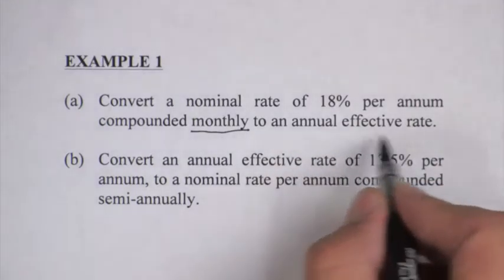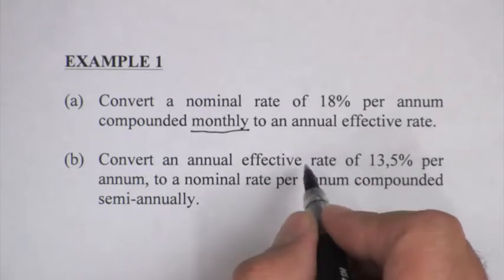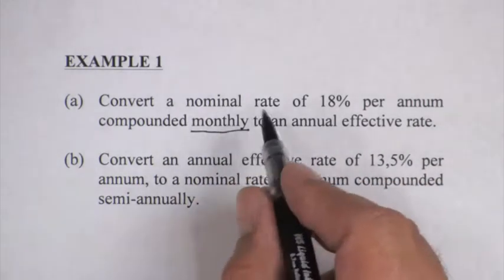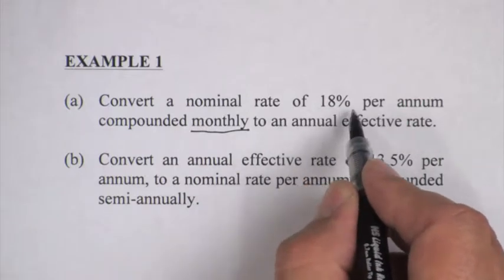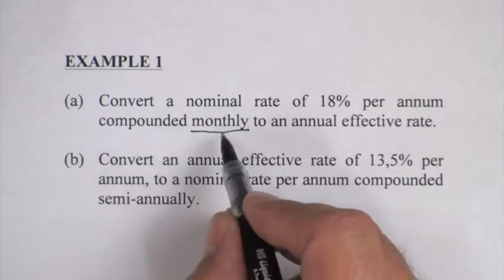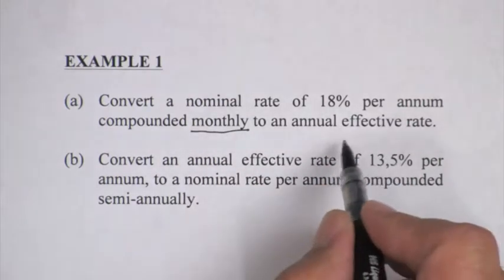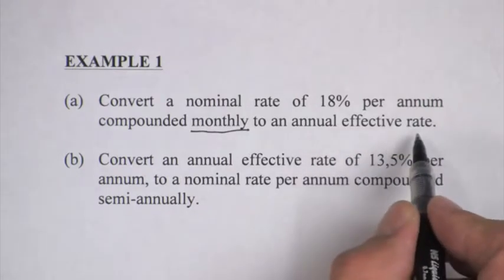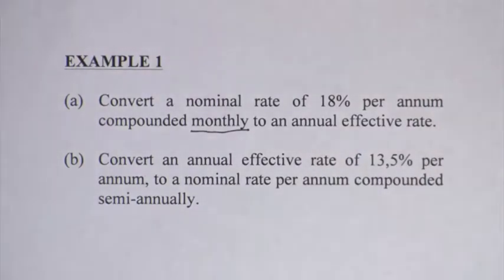So this annual effective rate, that annual stands for the yearly rate. So what must we do? The nominal rate is 18% per annum, it's compounded monthly, and we want to find the effective yearly rate. Let's do this calculation.